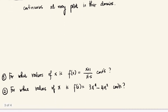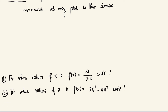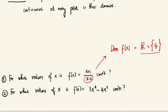For example, number one: for what values of x is f(x) = (x + 1)/(x − 5) continuous? The domain of f(x) is the set of all real numbers except 5, because x = 5 makes the denominator zero (undefined). So f(x) is continuous on that domain. For number two: f(x) = 3x⁴ − 4x² is a polynomial, so it is continuous entirely on the set of real numbers.